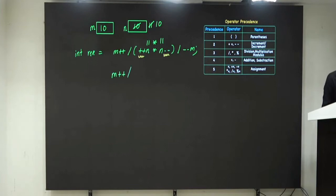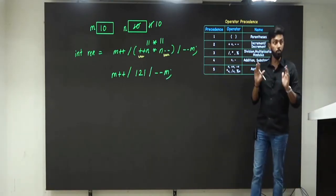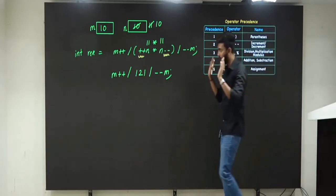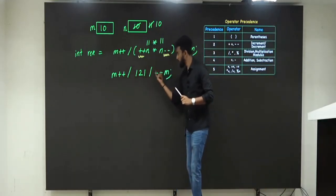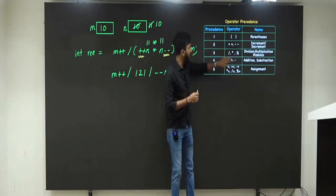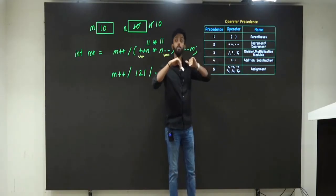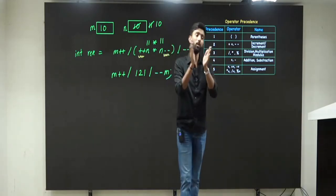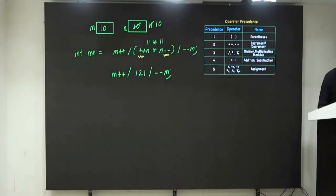Which means the expression has now become: m++ divided by 121 divided by --m. Now, plus-plus, slash, minus-minus — who has more priority? Incrementation over slash. Which means we handle one incrementation and one decrementation first.